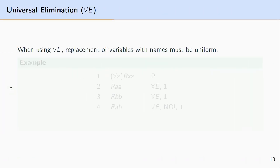One mistake I sometimes see is that the replacement of variables with names is not uniform. When you make use of universal elimination, this replacement of variables with a name needs to be uniform.